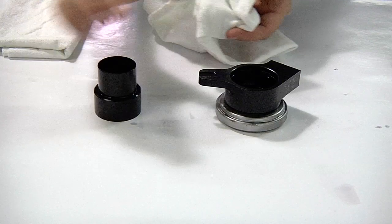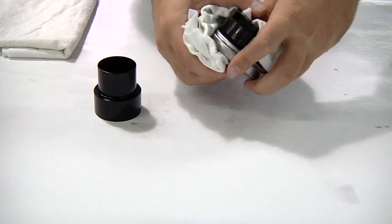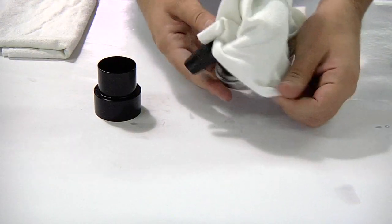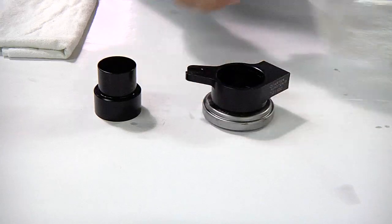When everything is apart, clean the parts with isopropyl alcohol or soap and water. Be sure that the parts are clean and dry before reassembly.